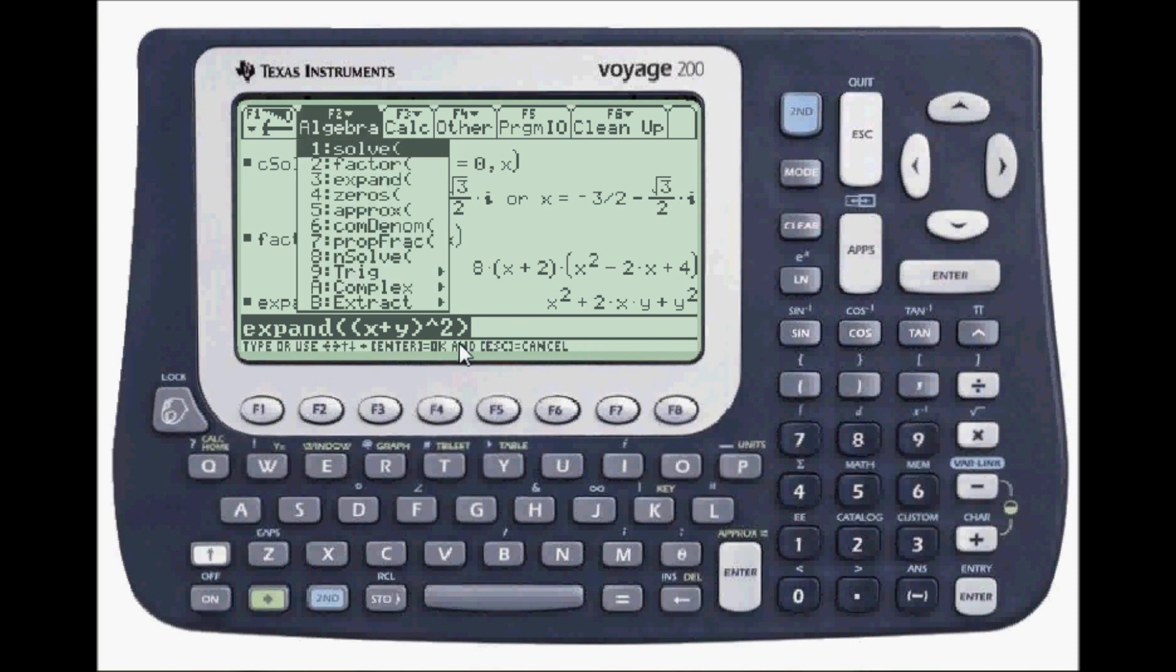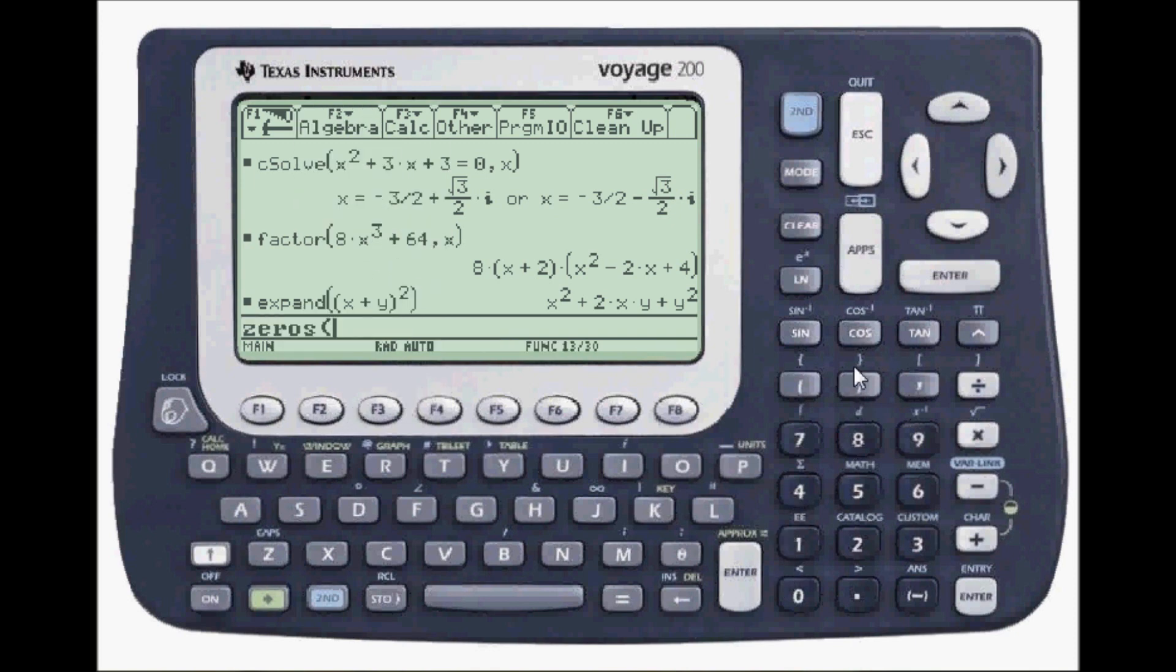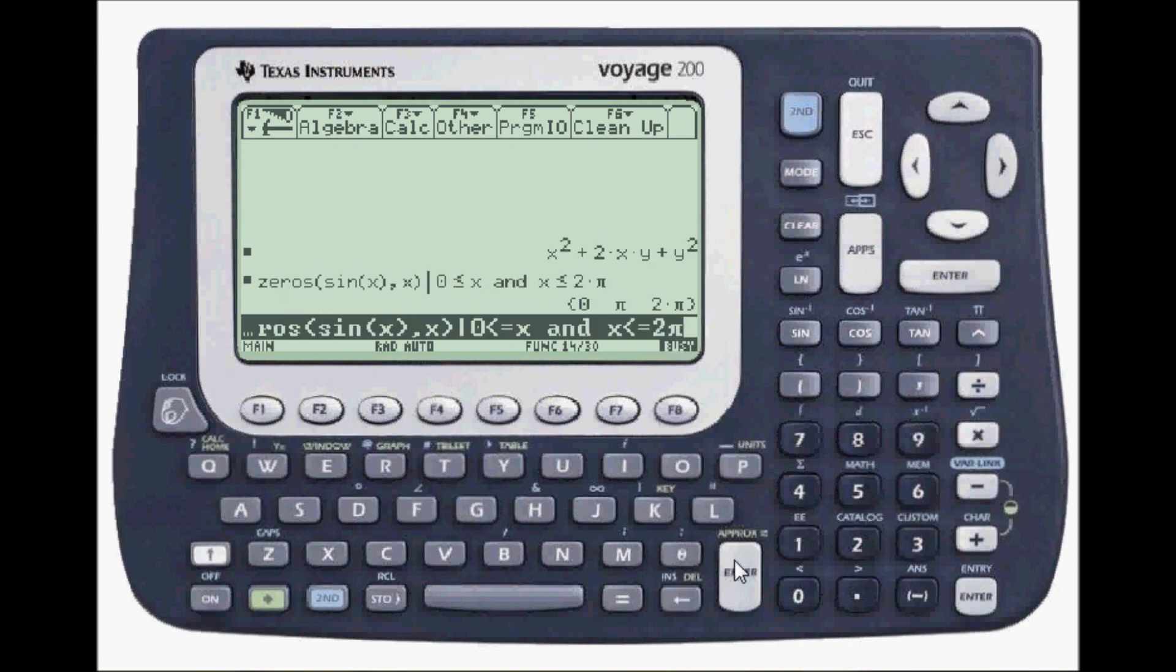Go back to F2 for zeros. Zeros is number four. Let's find when sine x is zero. And we're going to put some bounds on this. With the evaluation bar, which is over k. So, I want to find it only when zero is less than or equal to x and, so I get my and from catalog, and x is less than or equal to two pi. And pi is right here over the caret. Press enter. And it happens three times. Zero, pi, and two pi.